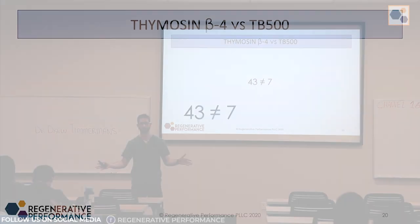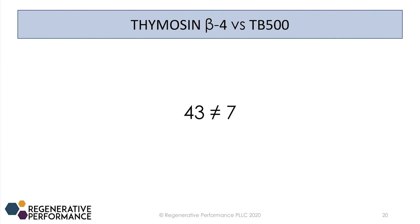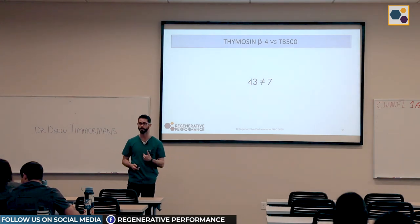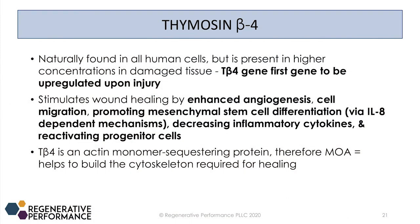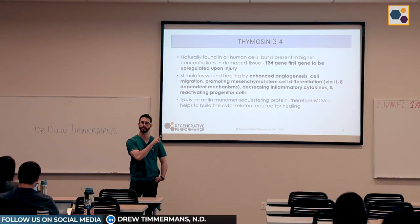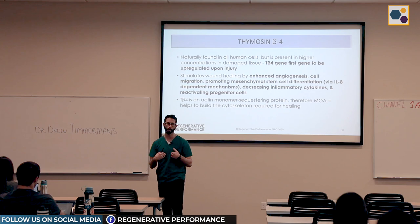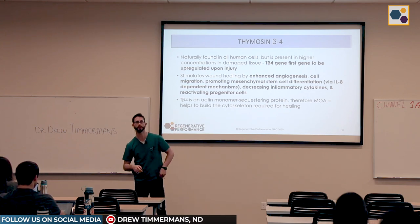TB500 is more anti-inflammatory than TB4, and they've basically isolated that out. But I prefer peptides with pleiotropic effects, so I prefer TB4 over TB500 because we get a lot more different effects. It's not going to be as strongly anti-inflammatory as TB500, but you'll have more widespread effects that I think end up being better. TB4 is naturally found in every single human cell and is upregulated when we have an injury, found in higher concentration where wound healing is occurring — whether cutaneous wound or cartilage degeneration.